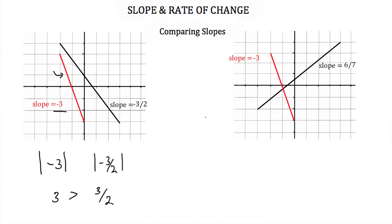Let's try the next example. We have our red line with a slope of negative 3 and a black line with a slope of 6 sevenths. If you can't tell which looks steeper from the graph, take the absolute value of both slopes: the absolute value of negative 3 is 3 and the absolute value of 6 sevenths is 6 sevenths. Since 3 is much greater than 6 sevenths, the line with the slope of negative 3 has a steeper slope than the line with the slope of 6 sevenths. And that completes this tutorial.